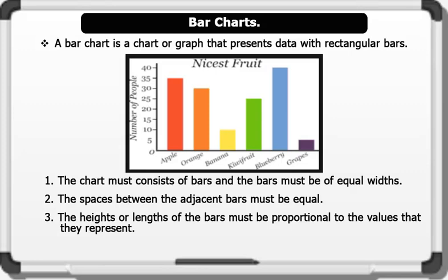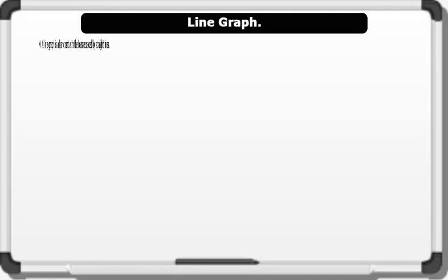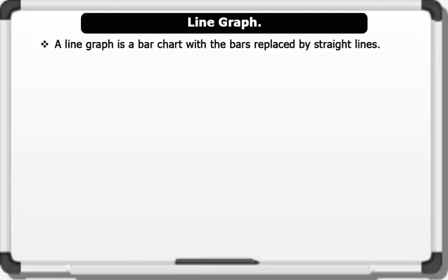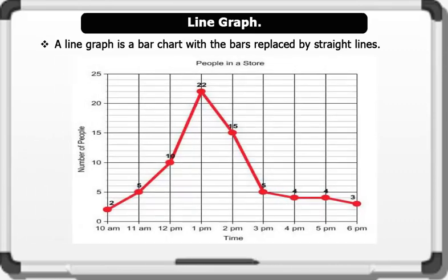That's brilliant. Line graph. A line graph is a bar chart with the bars replaced by straight lines. Below is a line graph. We plot line graphs using several points connected by straight lines. We also call it a line chart.